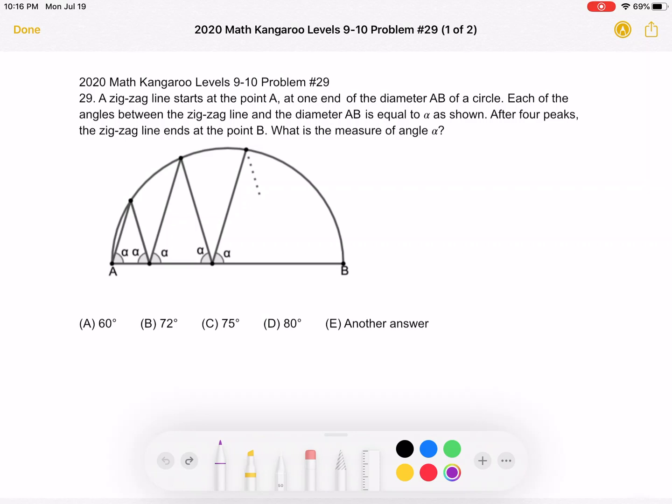What is the measure of angle alpha? A, 60 degrees. B, 72 degrees. C, 75 degrees. D, 80 degrees, or E, another answer.